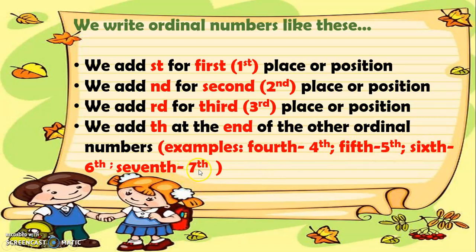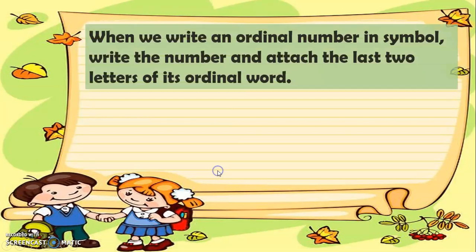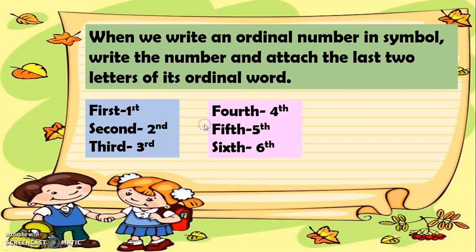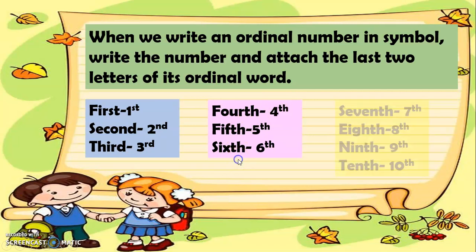So like fourth — 4th, fifth — 5th, sixth — 6th, seventh — 7th. When we write an ordinal number in symbol, we write the number and attach the last two letters of its ordinal word. For example, 'first' ends with S-T, so we write 1st. 'Second' ends with N-D, so we write 2nd. 'Third' ends with R-D, so we write 3rd. For the rest: fourth — 4th, fifth — 5th, sixth — 6th, seventh — 7th, eighth — 8th, ninth — 9th, tenth — 10th.